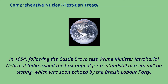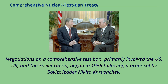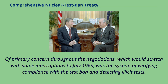In 1954, following the Castle Bravo Test, Prime Minister Jawaharlal Nehru of India issued the first appeal for a standstill agreement on testing, which was soon echoed by the British Labour Party. Negotiations on a comprehensive test ban, primarily involving the U.S., U.K., and the Soviet Union, began in 1955 following a proposal by Soviet leader Nikita Khrushchev. Of primary concern throughout the negotiations, which would stretch with some interruptions to July 1963, was the system of verifying compliance with the test ban and detecting illicit tests.